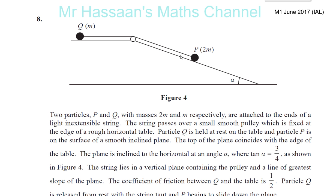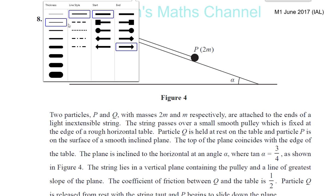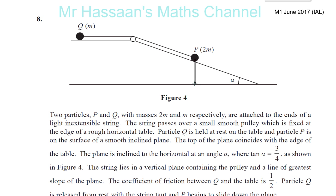To find the initial acceleration of the system, we first need to put all the different forces acting on the diagram. Starting with the weights of the particles: particle P has weight acting straight down, particle Q has weight acting straight down. Then we have the reaction force when the particle is in contact with the surface - the reaction force here acts straight up and is always perpendicular to the surface. When you have something at an angle, the reaction force will always be perpendicular.